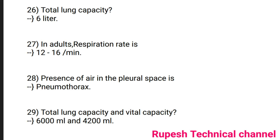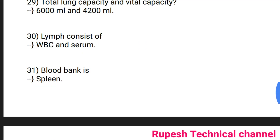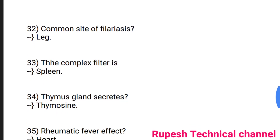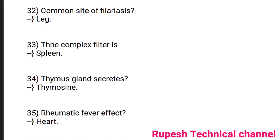Question number 30: Lymph consists of WBC and serum. Question number 31: Blood bank of the body is the spleen. Question number 32: Common site of phlebitis is the leg. Question number 33: The complex filter is the spleen.